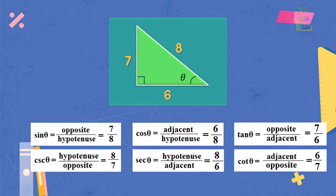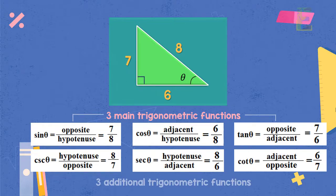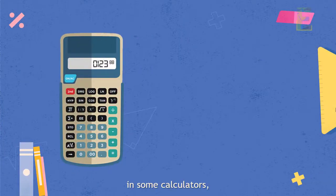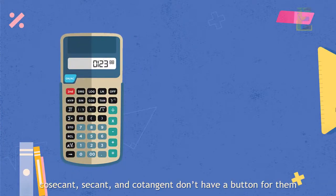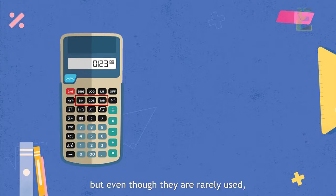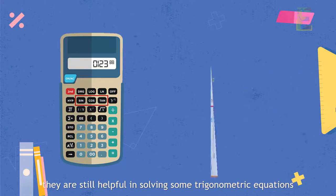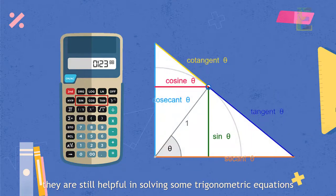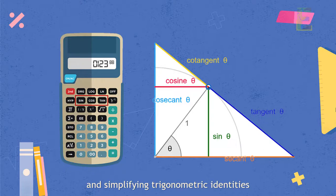So that's the basic idea of the three main trigonometric functions — sine, cosine, and tangent — and the three additional trigonometric functions — cosecant, secant, and cotangent. In solving right triangles, the three main trigonometric functions are traditionally used. Also, in some calculators, the cosecant, secant, and cotangent don't have a button for them. But even though they are rarely used, they are still helpful in solving some trigonometric equations and simplifying trigonometric identities.